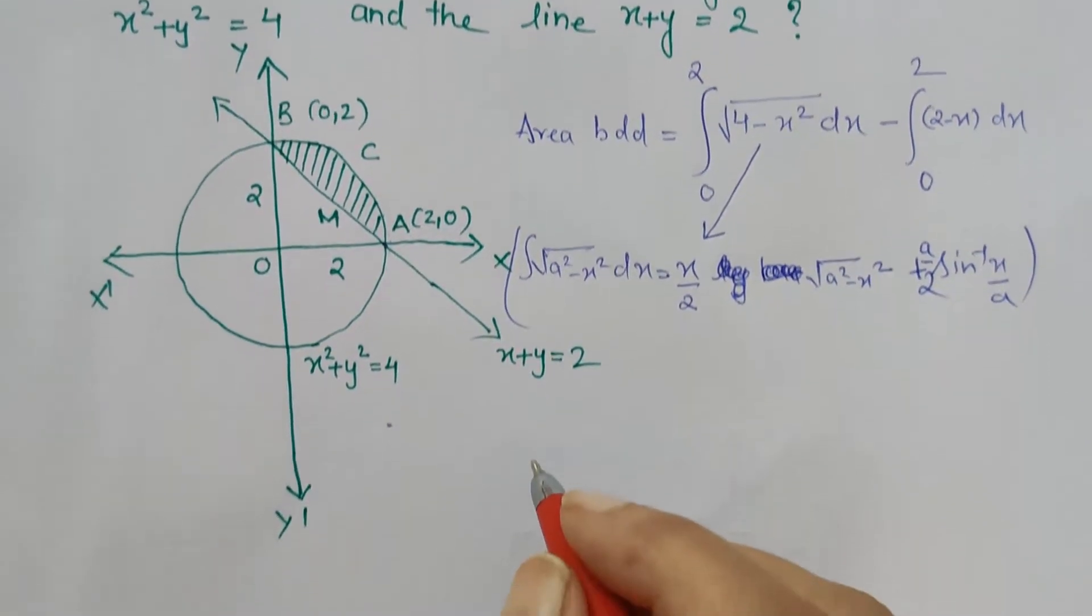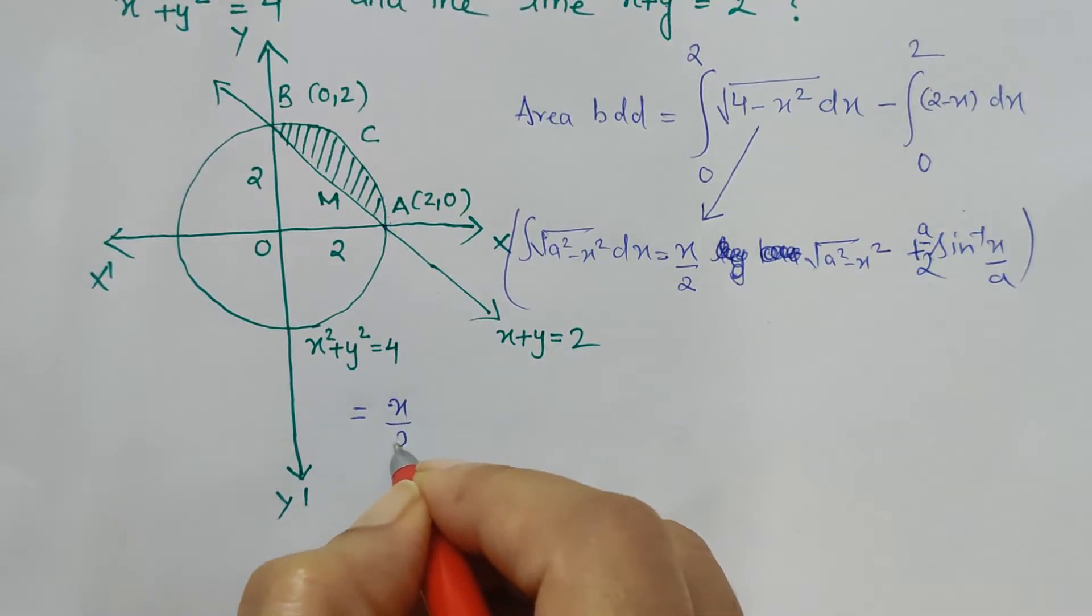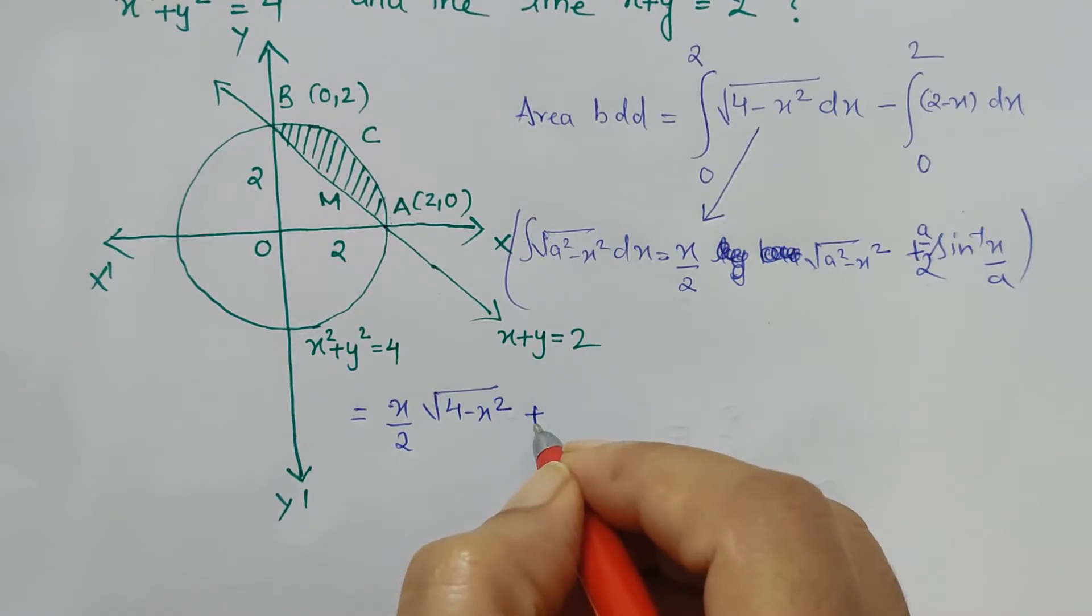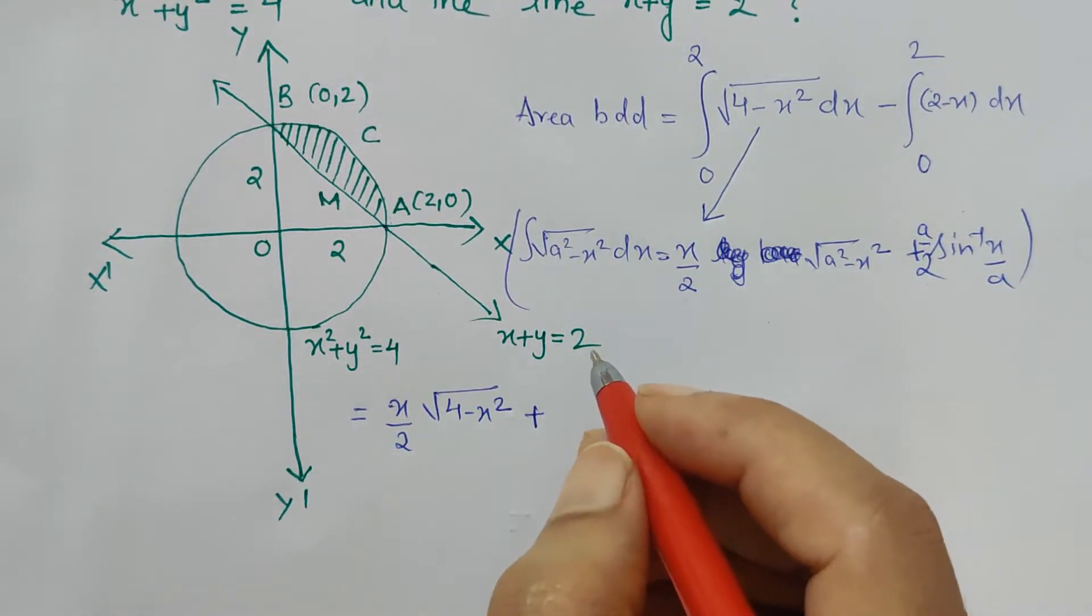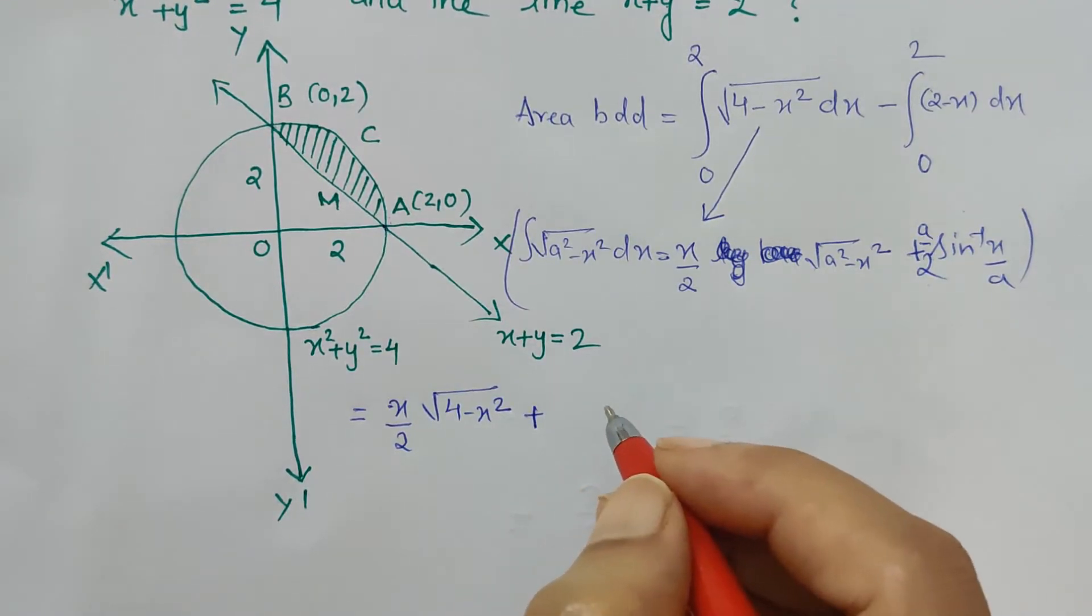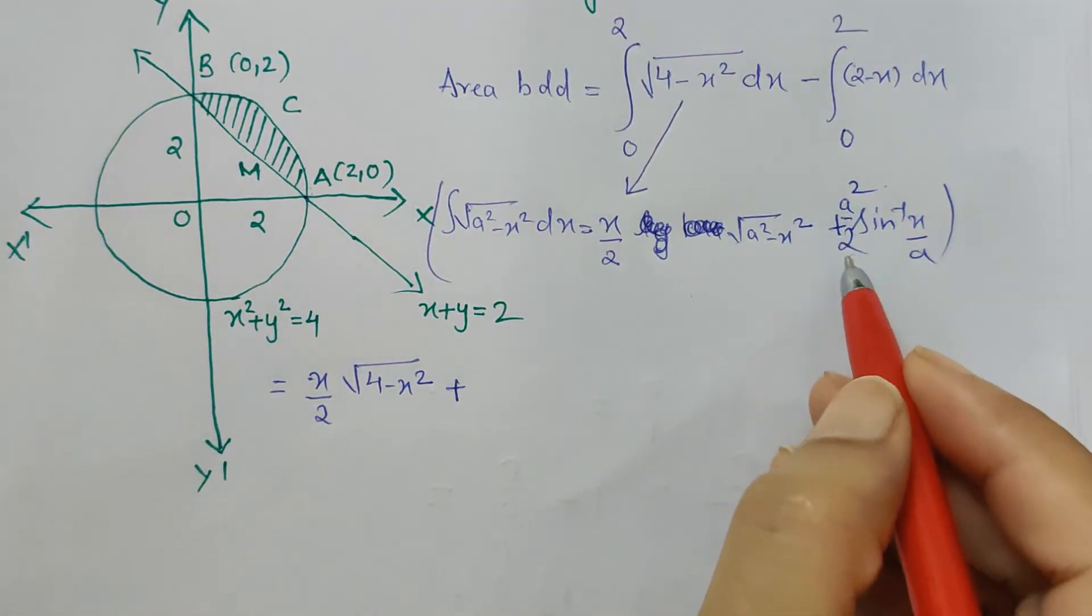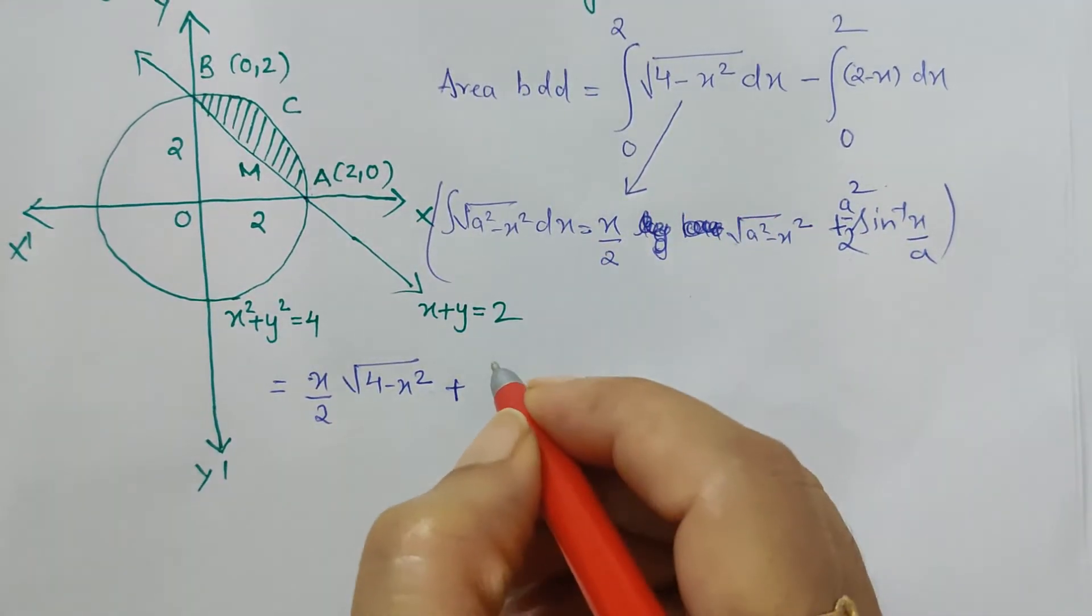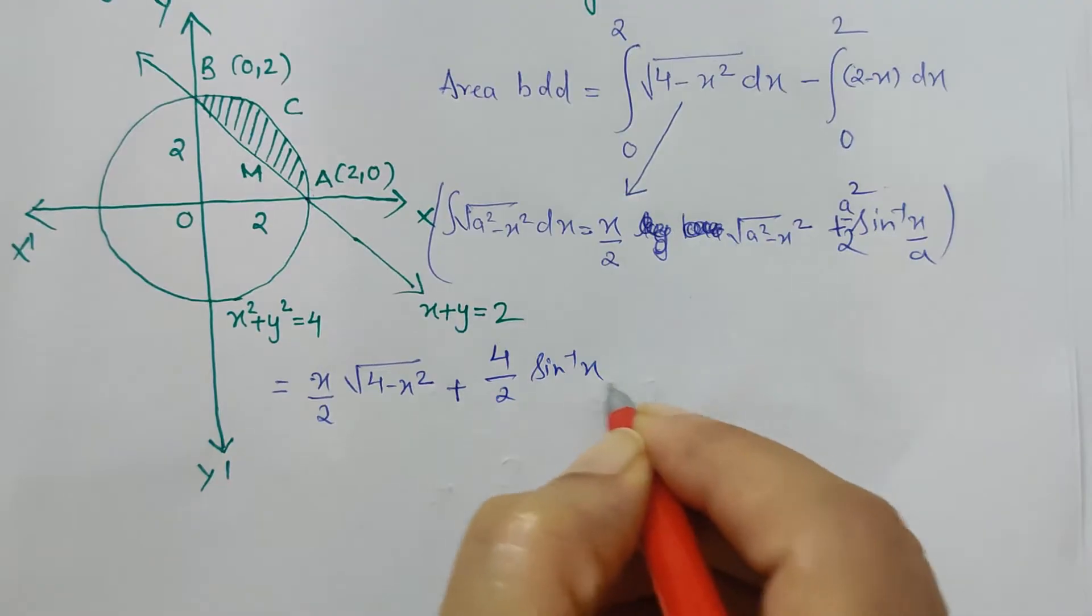It equals (x/2)√(4 - x²) plus a² is 4, so (4/2)sin⁻¹(x/a). What is a here? a is 2, so it's (4/2)sin⁻¹(x/2), with limits from 0 to 2.